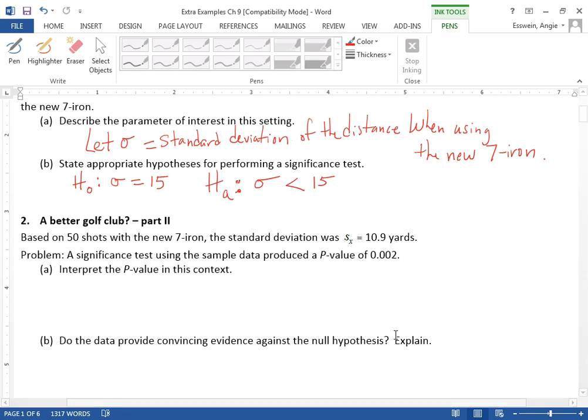Okay, so interpreting a p-value. So here we are. The standard deviation used to be 15 and we're wondering, do we have enough data to conclude that it's less than 15, which is better because we want less variability.